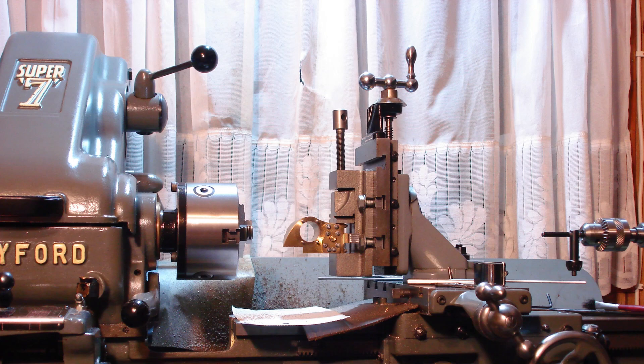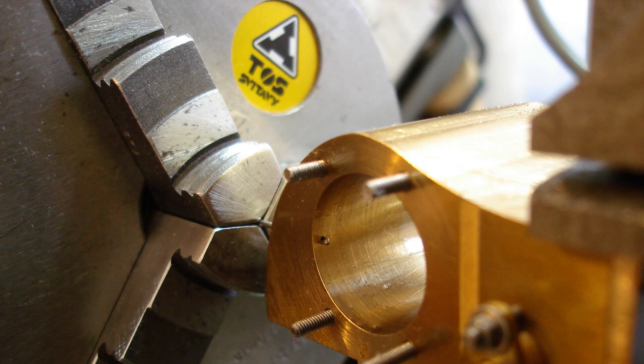A cylinder in the vise on the vertical slide for drilling the drain holes. It wasn't a very secure clamping, but the machining was very light. The first hole, 1mm diameter, with a center 70 thousandths from the face.